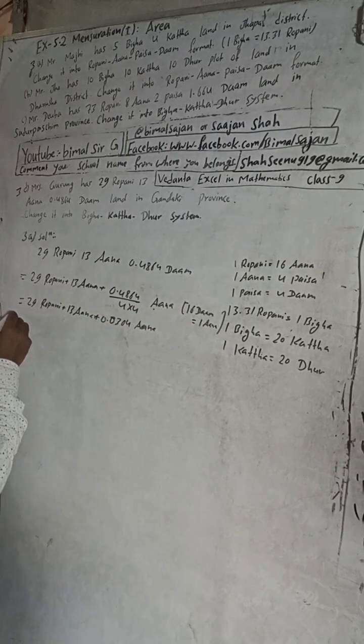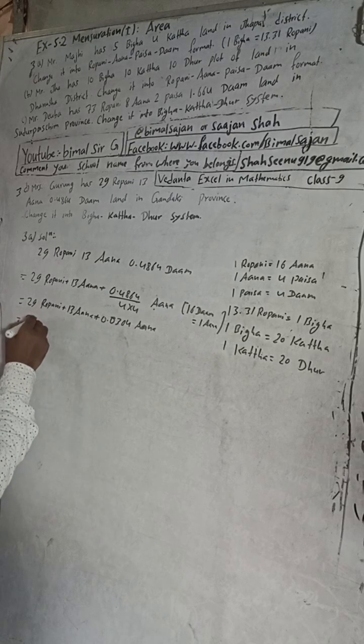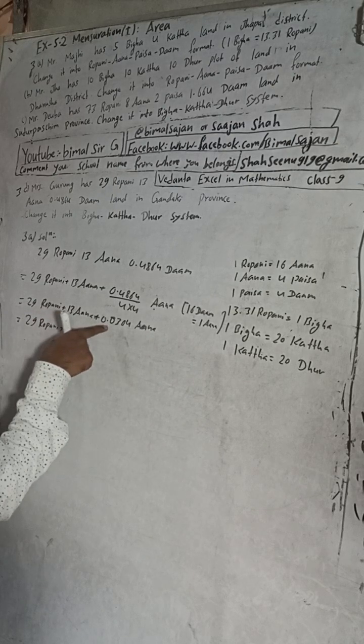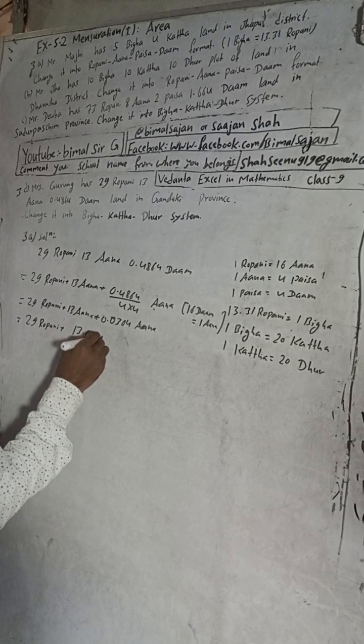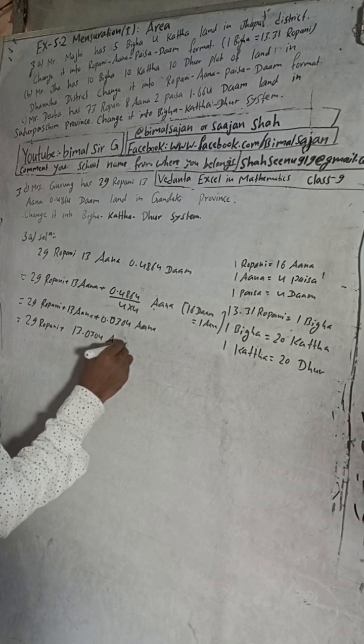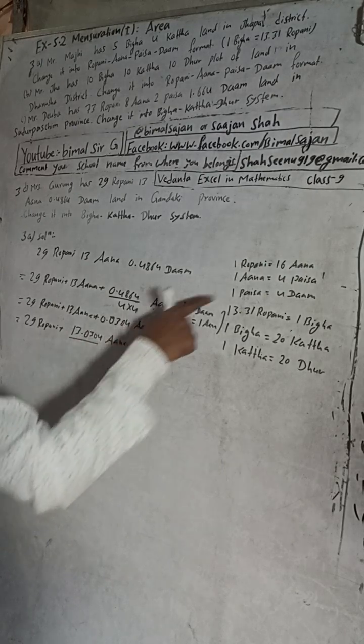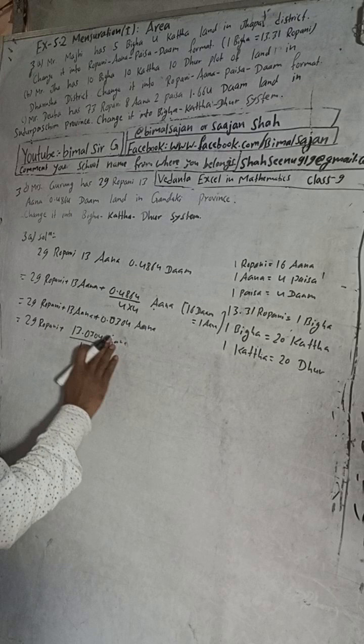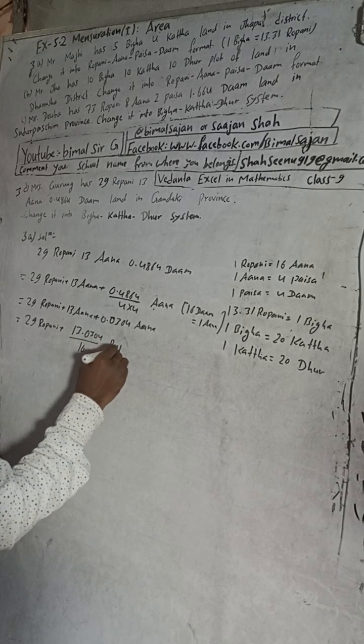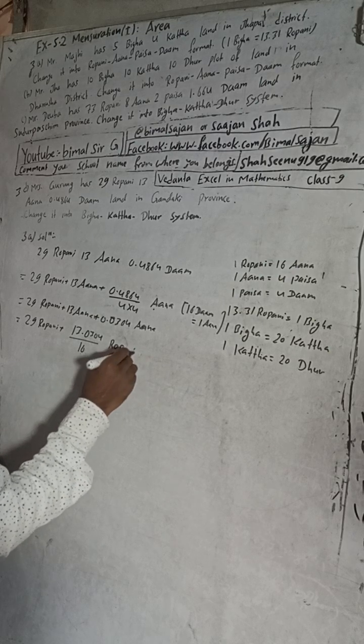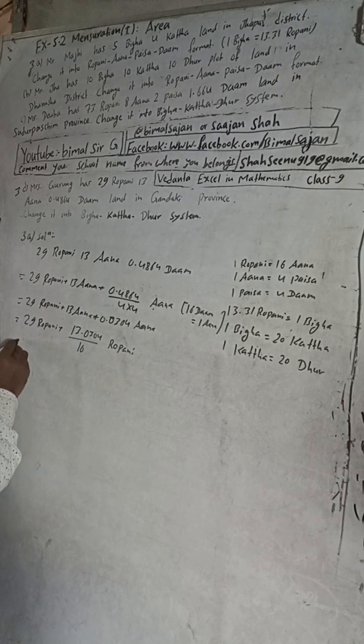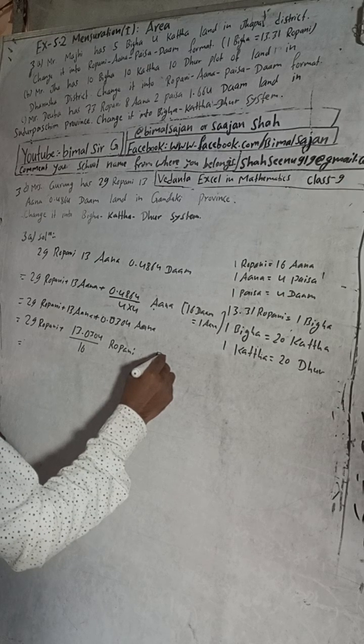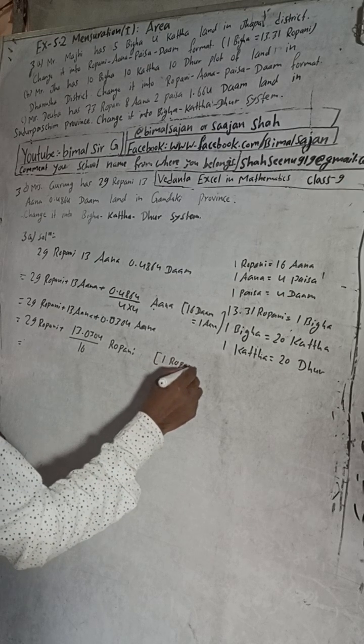Now here is, now we can add this Ana and Ana. So this is 29. So this is now Ropuni. So when we divide this Ana by 16 we will get into Ropuni. So this will be 16. Now this is what Ana, so this will be 16. Now the reason for this is here, 1 Ropuni is equal to 16 Ana.